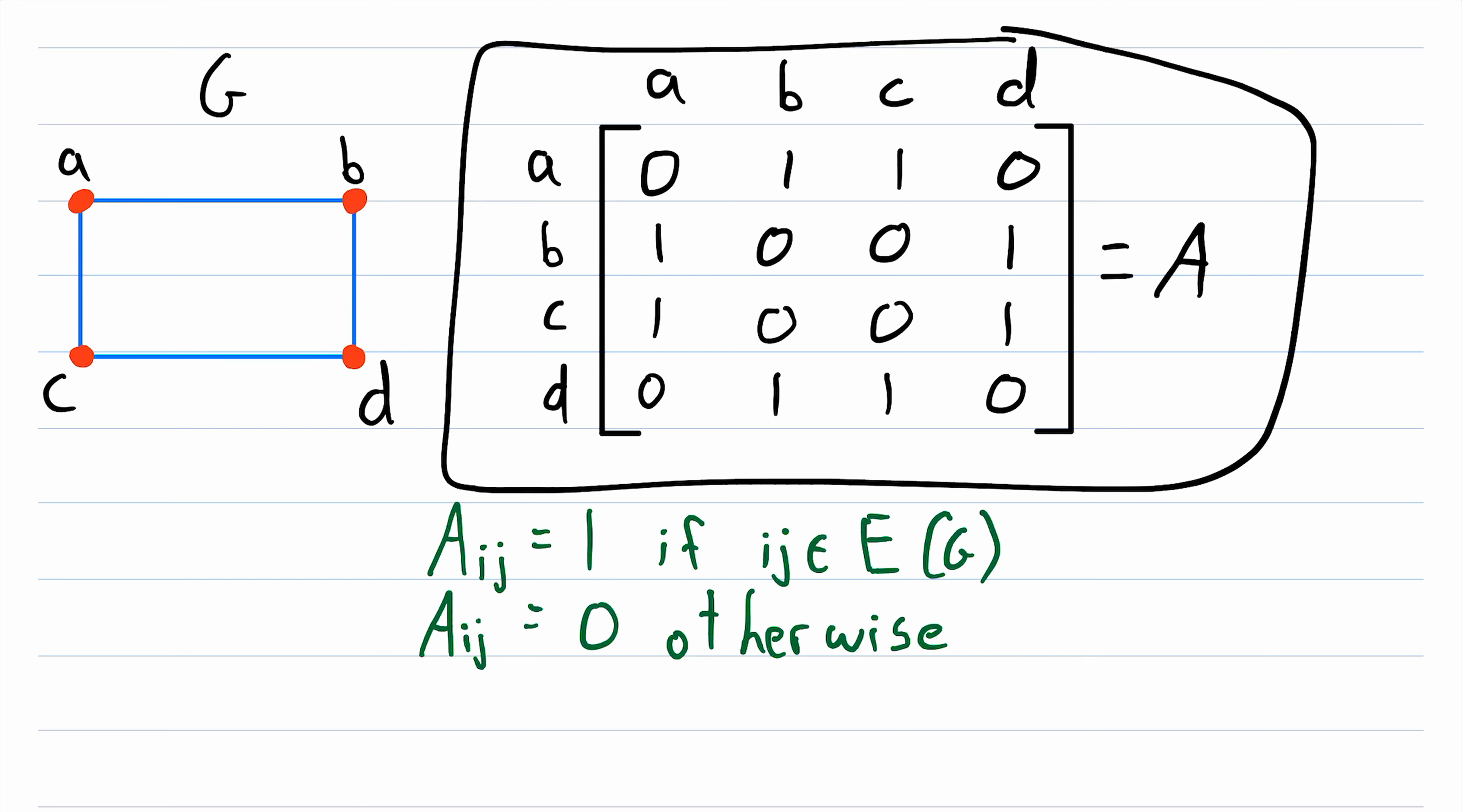So now we have finished filling out our adjacency matrix for G, and it completely describes G. It tells us all of the vertices of G, and it tells us all of the edges of G.